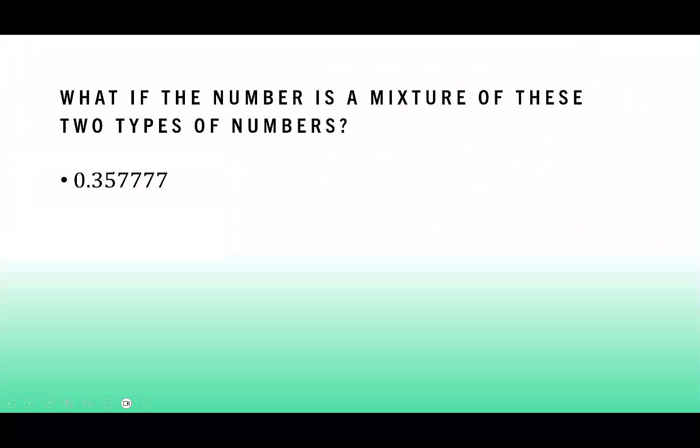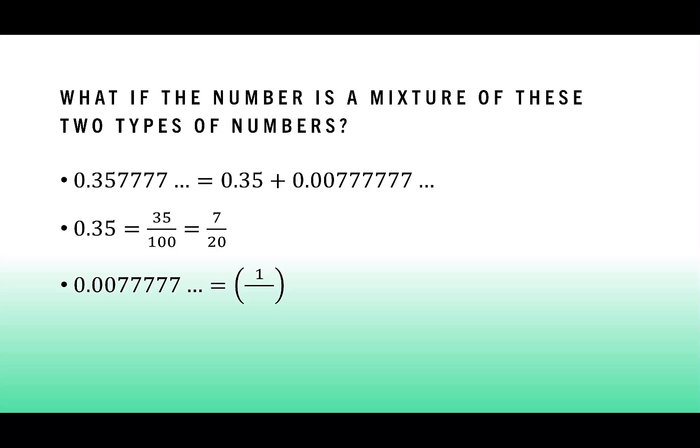Let's try one more like that. Here I have 0.35 with a repeating 7. I'll make that 0.35 plus 0.00 with a repeating 7. Notice this time I have two zeros before my repeating number. The 0.35 is just 35 over 100. You can reduce that to 7 over 20. To get the 0.00 with the repeating 7s, we need to do 1 over 100 to move it over two decimal places and then 7 over 9 to get the repeating 7. To get 0.35 with a repeating 7, I add 7 over 20 to 7 over 900, which is 161 over 450.